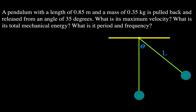I have made some previous videos for simple harmonic motion and pendulums, which you can link to in the upper right-hand corner. For this video, we have a pendulum with a length of 0.85 meters, a mass of 0.35 kilograms, pulled back from an angle of 35 degrees — our angle theta, the angle of displacement. We want to know the maximum velocity, the total mechanical energy, and the period and frequency of that pendulum.